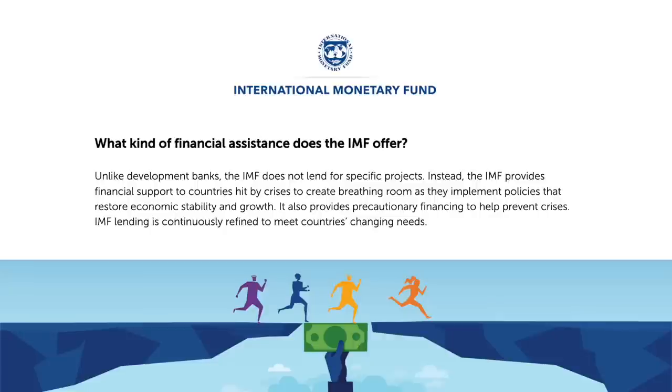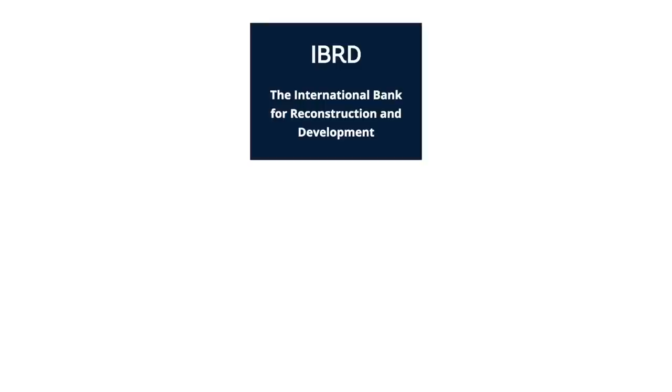Any time a country wanted to change the parity of their exchange rates, the IMF would have to approve or deny it. In addition to monitoring exchange rates, the IMF would also be the lender for any country experiencing a balance of payment problem. Each member of the IMF could borrow as needed, ensuring that interest rates wouldn't rise and trade barriers wouldn't pop up if a country's currency value suddenly got too low.